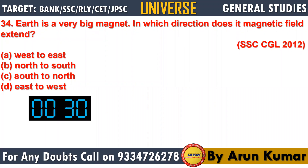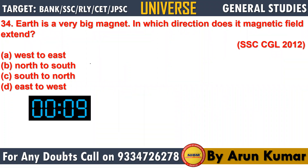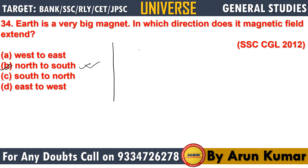Question 34: Earth is a very big magnet. In which direction does its magnetic field extend? The right answer is north to south. This is because the flowing of liquid metal in the outer core of the planet generates electric current, which forms a magnetic field extending around the planet.